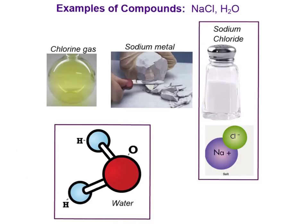What do we mean by fixed proportions? Water is a great example because you all know H₂O is water. When we write this, it means there are two hydrogens and only one oxygen in every water molecule. So every single water molecule has exactly two hydrogens and one oxygen — that is the fixed proportion.